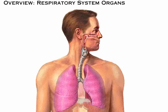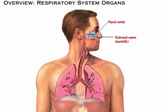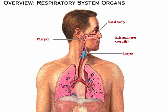Let's review the organs of the respiratory system by following the flow of air. Air enters the nose by passing through two openings called the external nares, or nostrils. Within the nose, the air passes through the nasal cavity and then travels through the pharynx, a muscular tube which carries both food and air throughout most of its length. Air then enters the larynx.